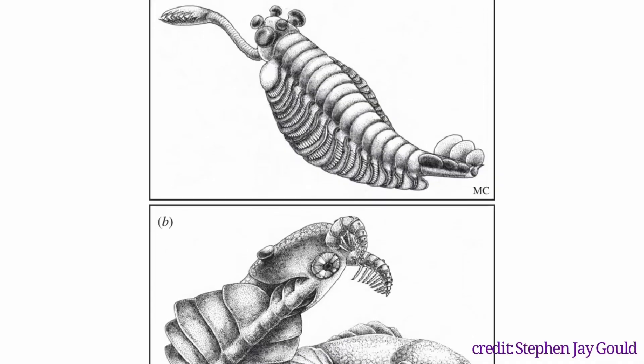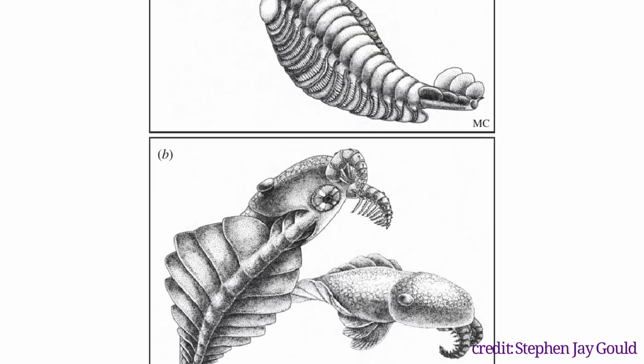This phylogeny is still widely accepted, but some hypotheses place Opabinia and Anomalicharis in their own clade, making them more closely related to each other than to arthropods. Like most things learned from fossil evidence, the true answer may never be known for certain, but like life on earth, science continues to evolve.